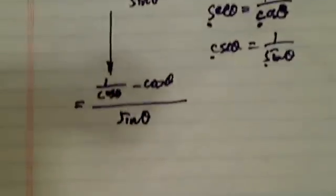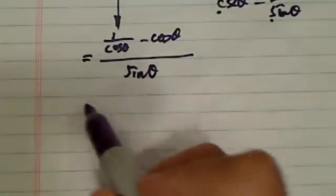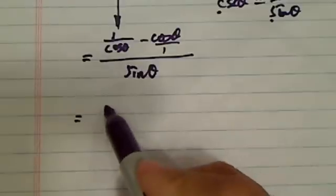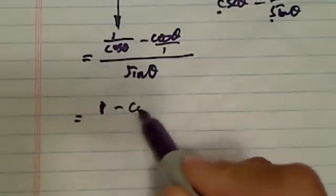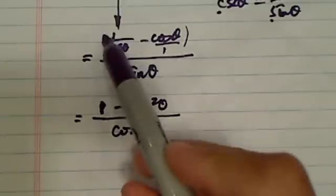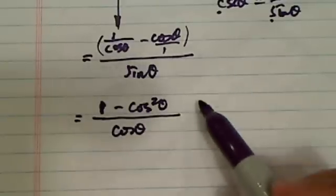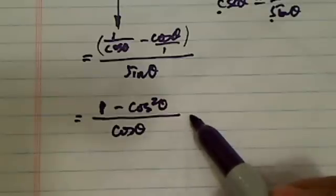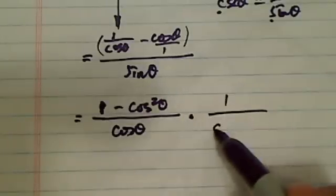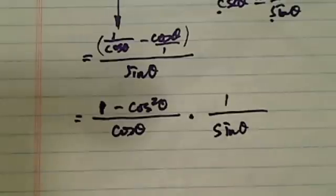This is often the case with trig functions or expressions. It gets messier before it gets better. Here, we need a common denominator. So it's 1 minus cosine theta squared divided by cosine theta here. So I combined the top. I made it a common denominator, cosine theta. And then, since I'm dividing sine theta, that's equal to multiply by 1 over sine theta.